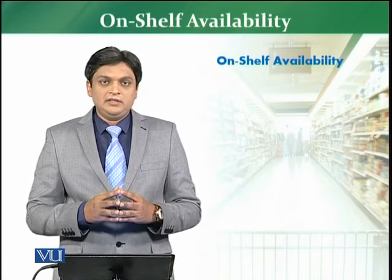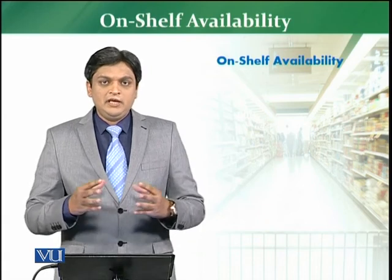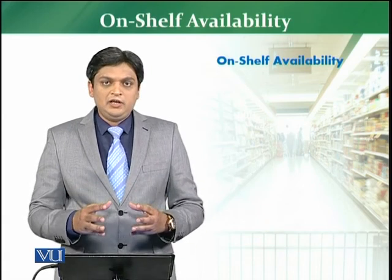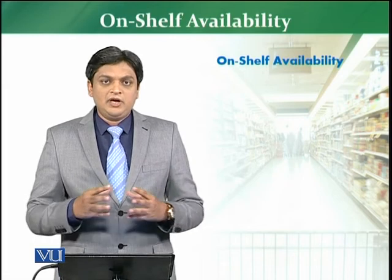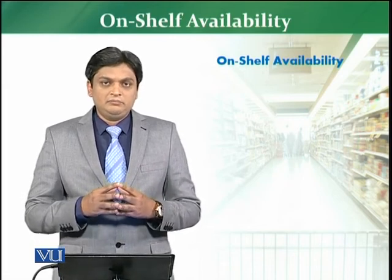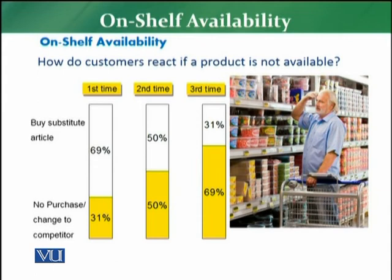Let me share how it works — how the customer reacts when products on the shelf are not available. There are three scenarios. The first time a customer visits the store and does not find a particular product they are looking for, what is the outcome?